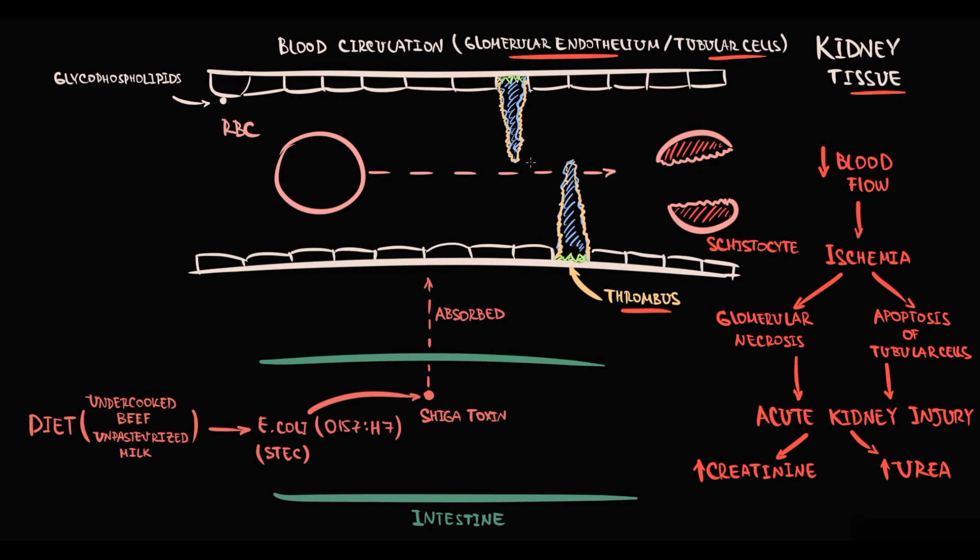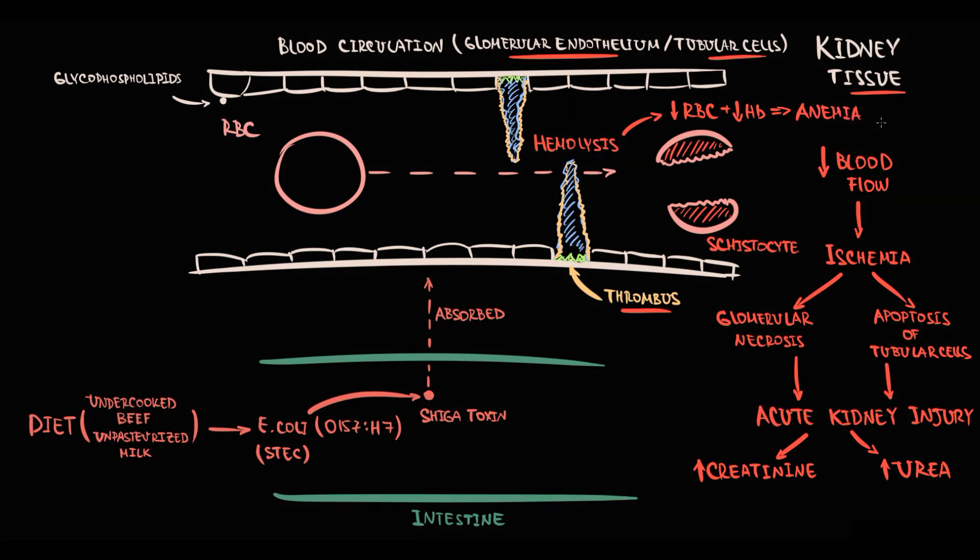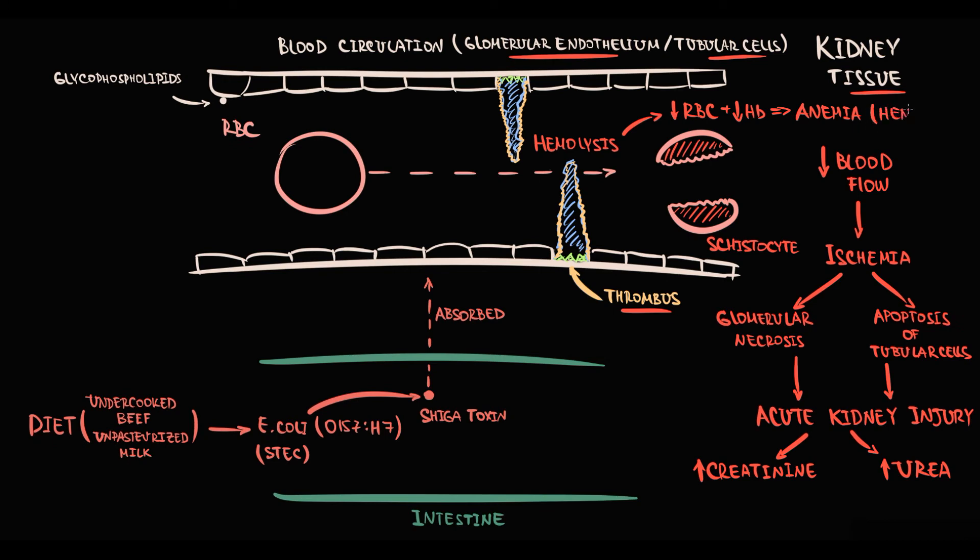With hemolysis of red blood cells, obviously the total red blood cell count decreases. Simultaneously, hemoglobin concentration decreases. Decreasing hemoglobin concentration is a condition known as anemia. Because this anemia is caused by hemolysis, it's called hemolytic anemia. Also, lactate dehydrogenase that was contained inside the red blood cell enters the blood, so lactate dehydrogenase level will be significantly elevated.